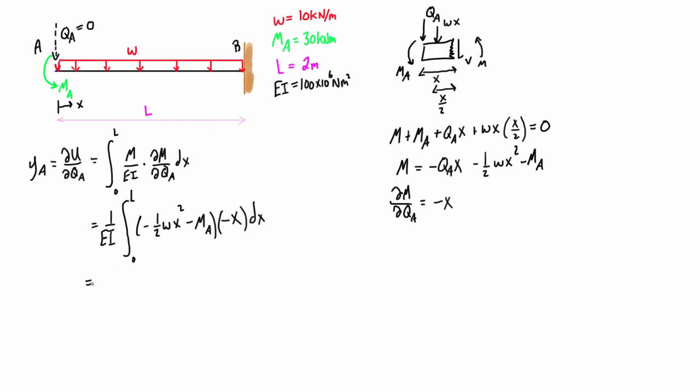From here on out it's pretty straightforward integration. We have one over EI. We can just distribute this X, this negative X in, so we have zero to L. That negative is going to cancel out with this negative, so we are left with one half WX cubed plus MA X dx.